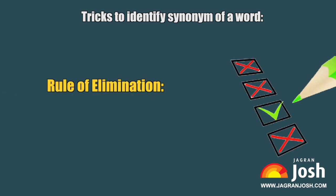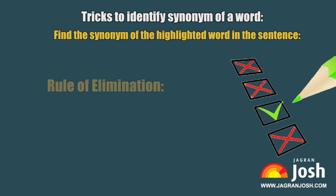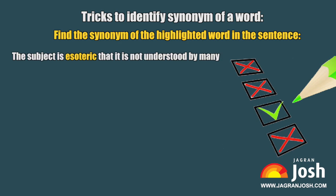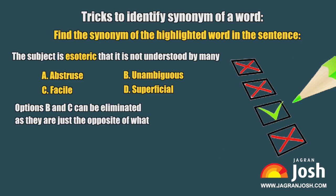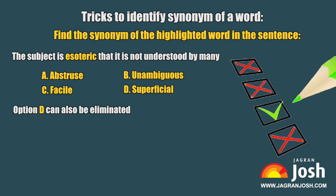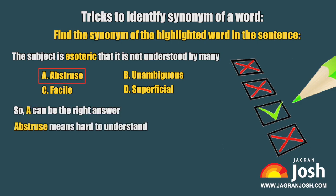Another method is the Rule of Elimination — reaching the answer by neglecting the improbable. There will be certain options that don't fit the context of the sentence or word. For example: Find the synonym of the highlighted word in the sentence: 'The subject is esoteric that it is not understood by many.' Options: A. Abstruse, B. Unambiguous, C. Facile, D. Superficial. It is understood that the subject is not easy to understand, so we need a word meaning something that cannot be understood easily. Options B and C can be eliminated as they are the opposite of what we need. Option D can also be eliminated as its meaning has nothing to do with our question. So A — Abstruse, meaning hard to understand — is the right answer.